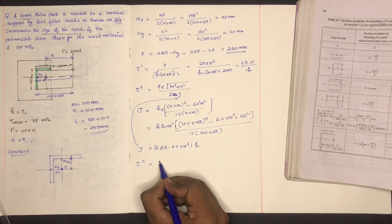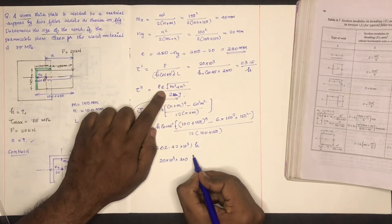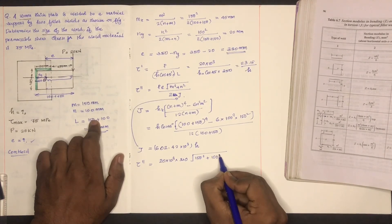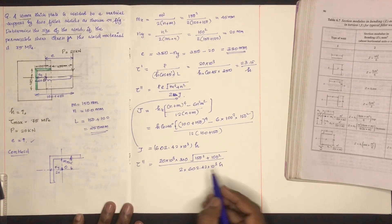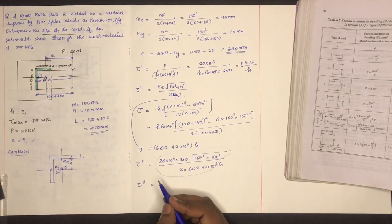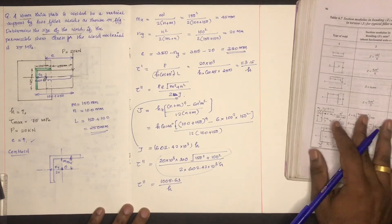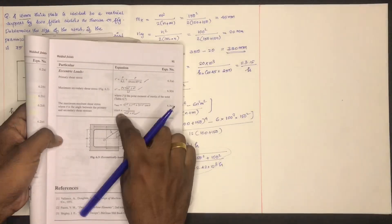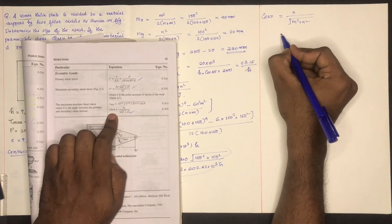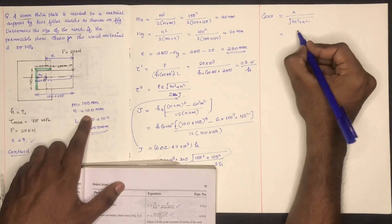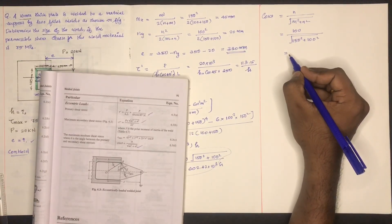Substituting: P = 20 × 10³ N, √(m²+n²) = √(150²+100²), divided by 2 into J. J = 602.42 × 10³ × h. Calculating gives τ'' = 1005.63 / h. Also, cos θ = n / √(m²+n²) = 100 / √(150²+100²), which equals cos θ = 0.8721.